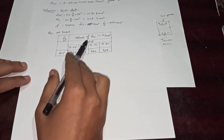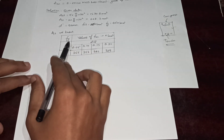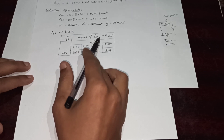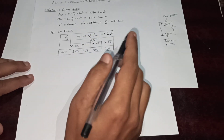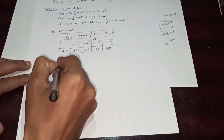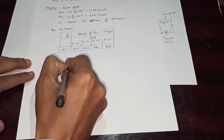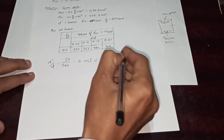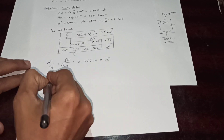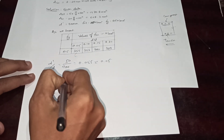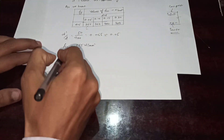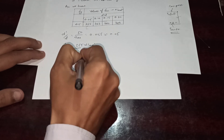Based on the ratio of effective cover to effective depth and the grade of steel, we can find the compressive stress in steel at the compression zone, that is FSC. Our d'/d ratio equals 50 divided by 900, which equals 0.055 — approximately equivalent to 0.05. From the IS code table, we take FSC as 355 N/mm².